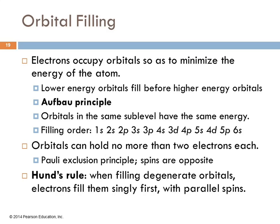So when we talk about orbital filling, the electrons are going to occupy the orbitals to minimize the energy of the atom. The electron people in that hotel are going to pay as little as possible to stay there. They're going to go in the lowest price rooms. The electrons go in the lowest energy orbitals. So the lower energy orbitals fill before the higher energy orbitals. The Aufbau principle is just that, that they fill the lower energy ones first.